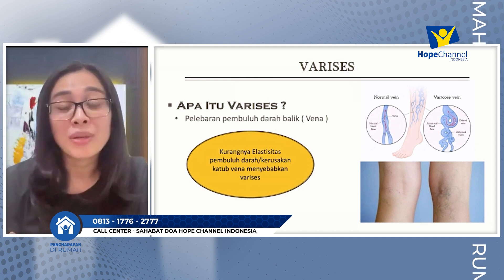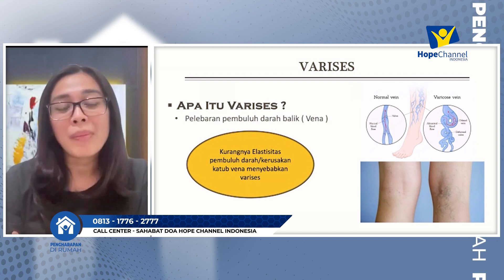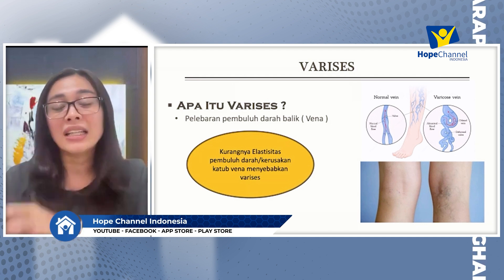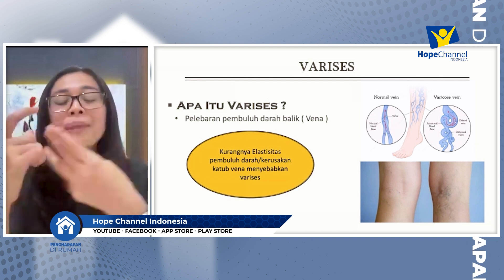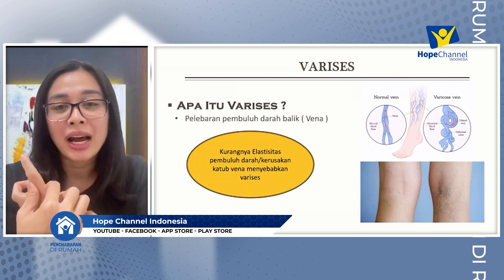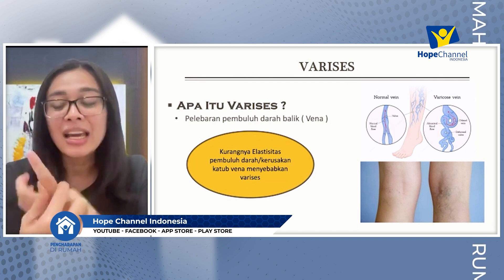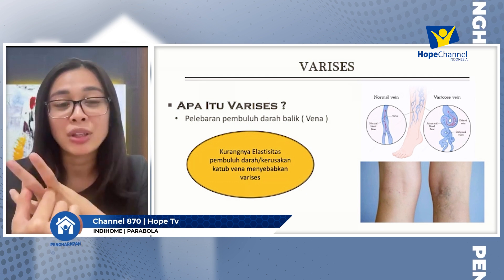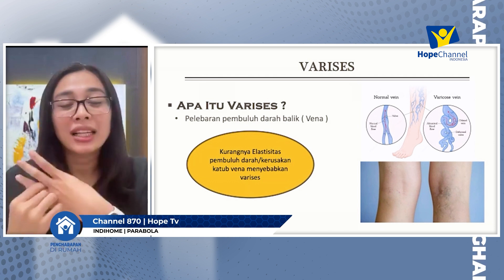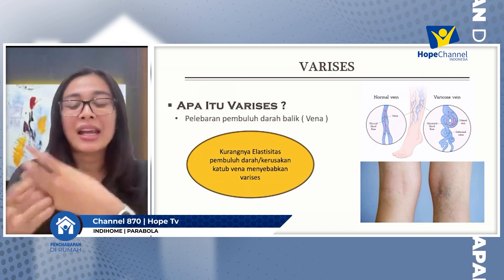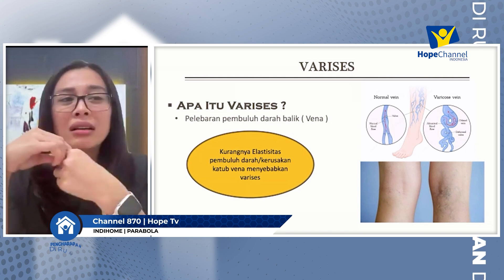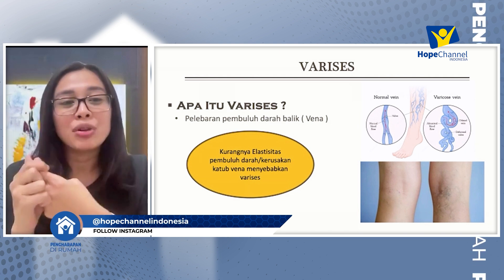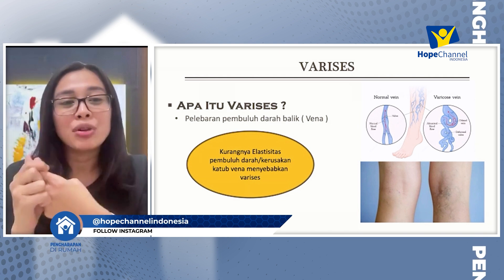Kita ketahui bersama bahwa pada tubuh manusia biasanya terdiri dari tiga pembuluh darah yang berbeda. Yang pertama adalah pembuluh darah arteri, yang kedua adalah pembuluh darah vena atau yang disebut dengan pembuluh darah balik, kemudian yang ketiga adalah pembuluh darah kapiler. Pada tiga pembuluh darah ini memiliki fungsi dan juga struktur yang berbeda-beda.